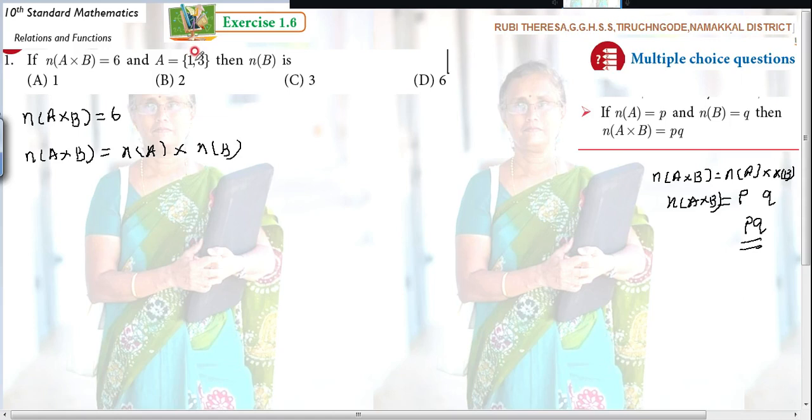Cardinal number is nothing but the number of elements in your finite set. This is a finite set. You are able to count it. Countable number of elements are there. So n(A) equals 2.